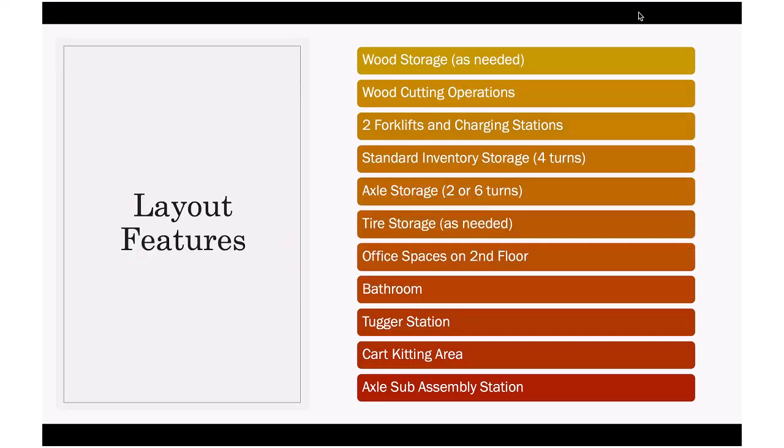We will now highlight our final layout features. The layout will have wood storage, a wood cutting area, two forklift charging stations, three double-sided racks, one-sided rack on the south end, axle storage, wheel storage, office spaces at the second floor, a bathroom, a tugger station, cart kitting area, and finally axle sub-assembly station.